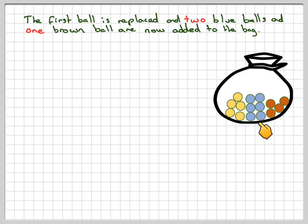The diagram now looks like that. We've now got two extra blue balls and one extra brown ball, and we're asked to calculate the probability of getting an orange.